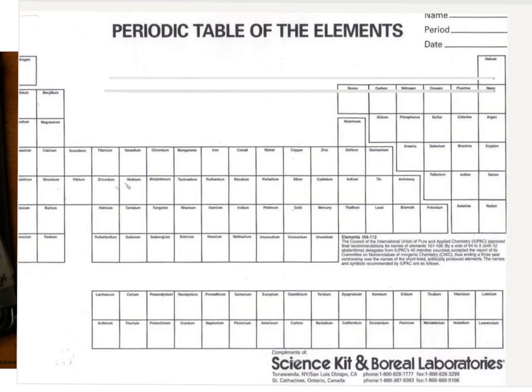Before we move on, make sure you've completed the previous steps: numbered your 18 groups and seven periods, put ion charges above each group and highlighted them, written all atomic numbers in red, and all atomic masses in black. Now the next thing we are going to do is write the element symbols. When we write the element symbols, we are going to color code them as well.